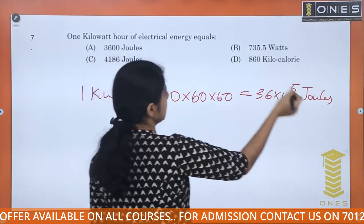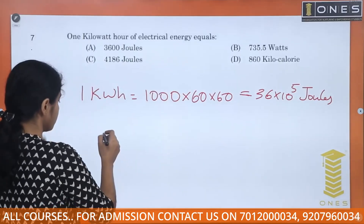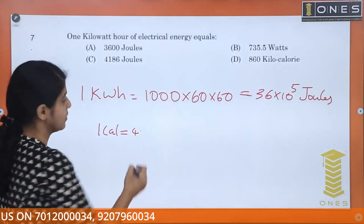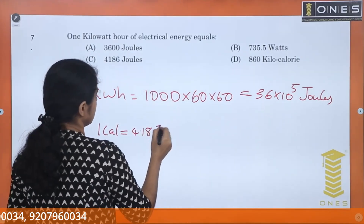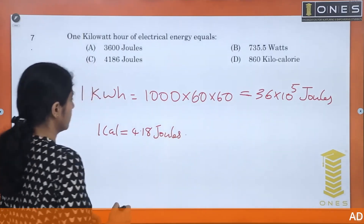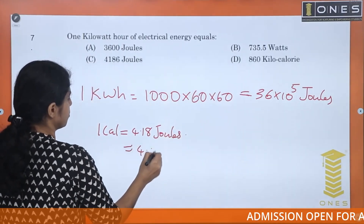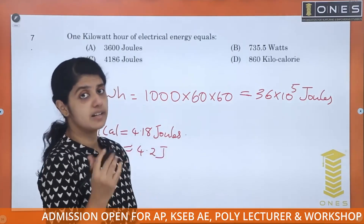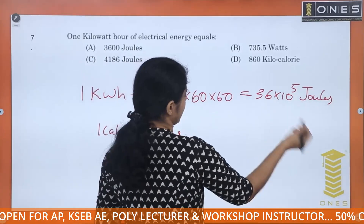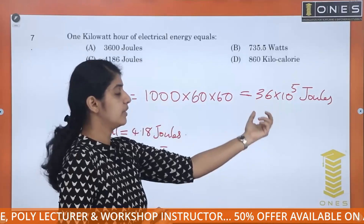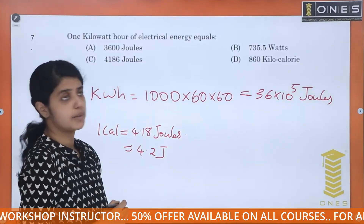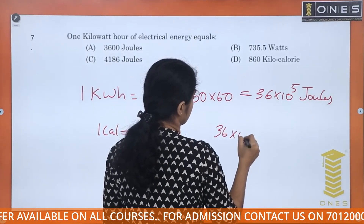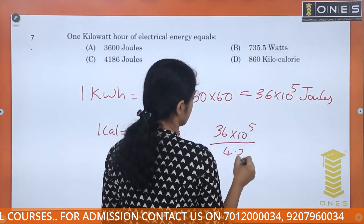Now let's convert into calories. We know 1 calorie is equal to approximately 4.18 joules, and we'll use the approximate value of 4.2 joules. So we divide 36×10⁵ by 4.2 to convert this energy value into calories.